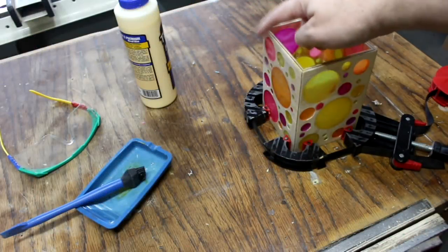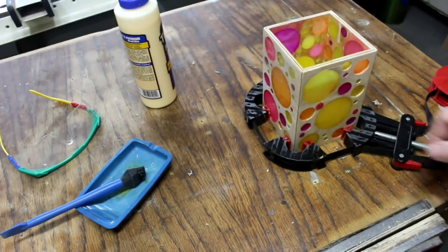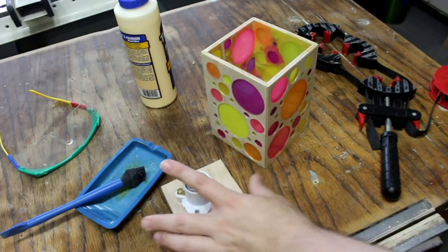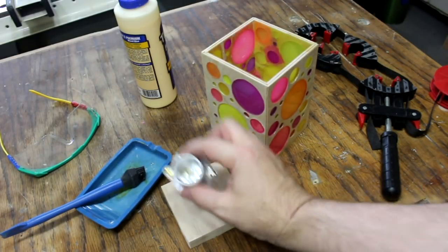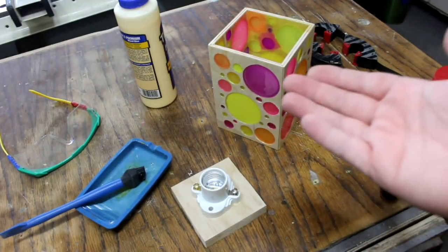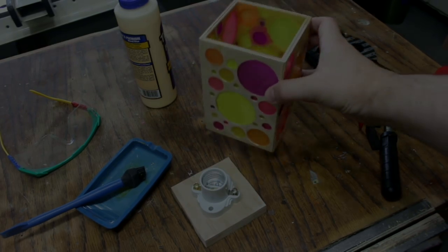I went ahead and cut 45 degree angles on these pieces and then glued them up into a box. What I've got is this block of wood here and this bulb terminal. The only thing I need is a platform that kind of raises it up a little bit.